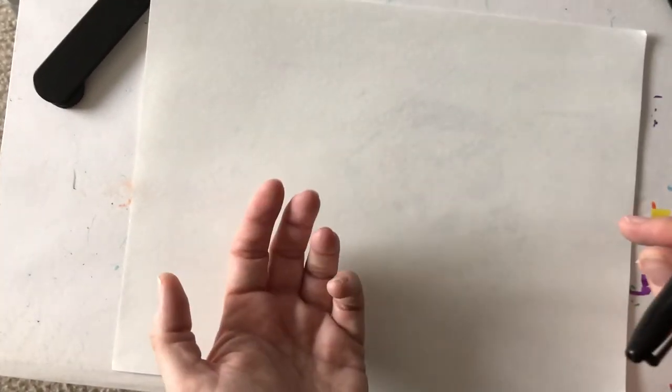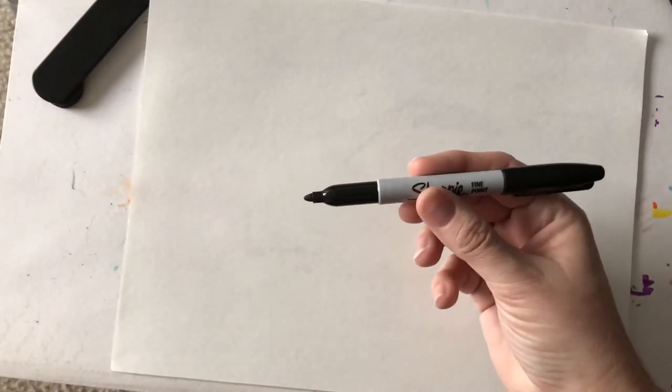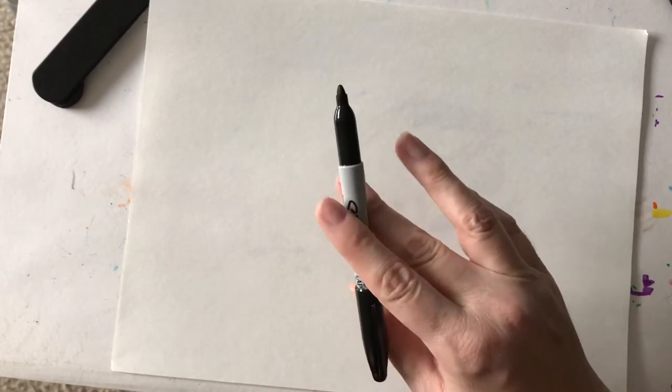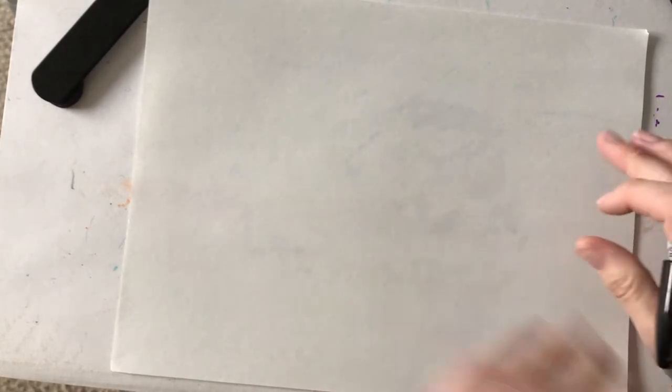We're going to be making mittens today and what we need to do first is have a piece of paper. This is just regular white paper turned sideways or horizontal and you're going to need a pencil to start. You will also need some markers and crayons. I'm using a black sharpie to start just so you can see what I'm doing but you don't have to use a sharpie.